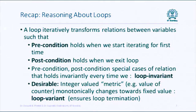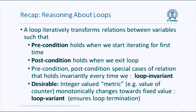Whenever you begin an iteration of the loop, the loop invariant holds at that point. When you write a complicated program with a complex loop condition, you want to make sure the loop actually terminates — otherwise it might be a non-terminating or infinite loop. So it is desirable to have some integer-valued metric, typically an expression on the variables, which monotonically changes towards a fixed value, such as a counter decrementing from n to 0 or incrementing from 0 to n. This metric is also called a loop variant, and it is useful to argue that your loop will terminate.